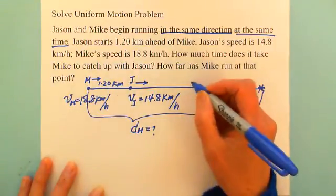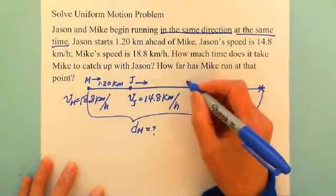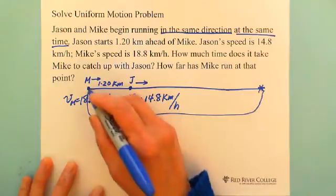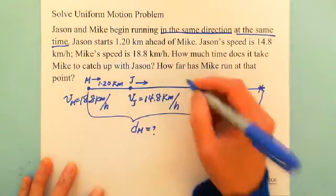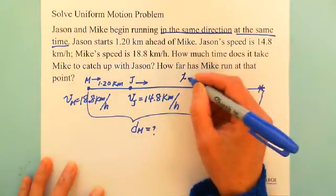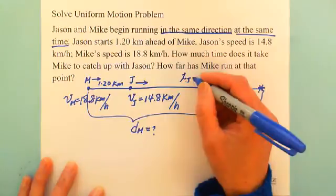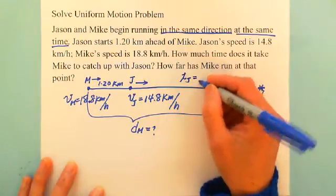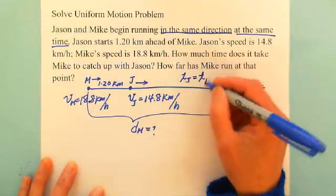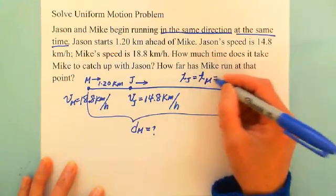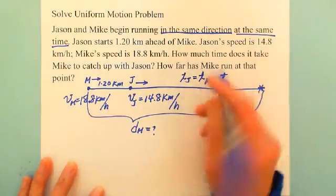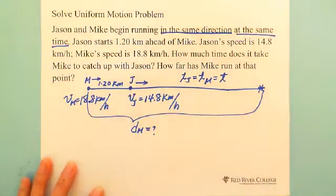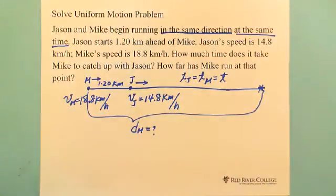Because they start at the same time, T_Jason equals T_Mike, which we just call T. These two start at the same time, so we use the same time variable T.